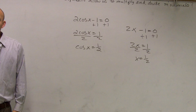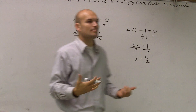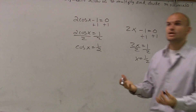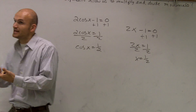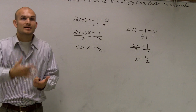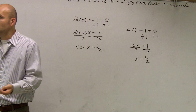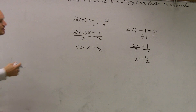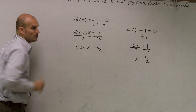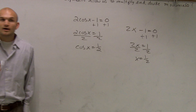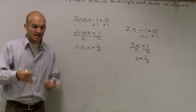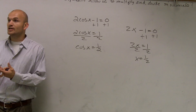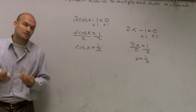Remember, we've got to think about what that solution means. What does our x represent? Remember, we take the function of an angle — it's the cosine of your angle equals 1 half. So I need to figure out what angle makes cosine equal 1 half. Remember, cosine represents our x value when we're talking about a coordinate point on the unit circle.